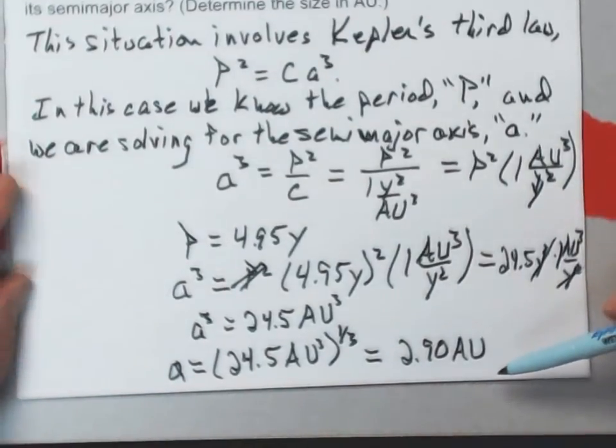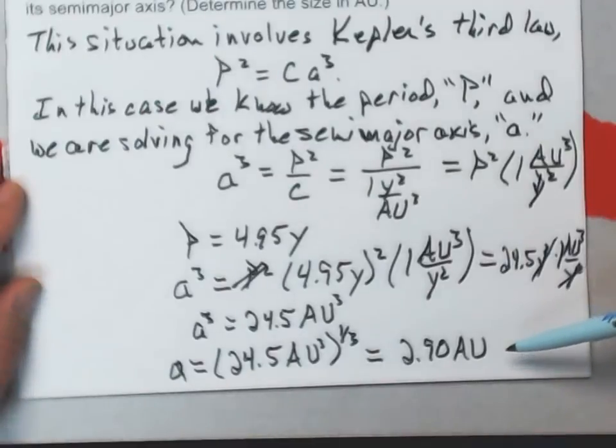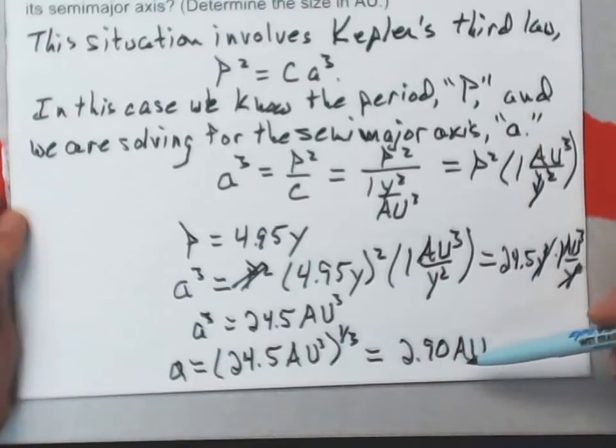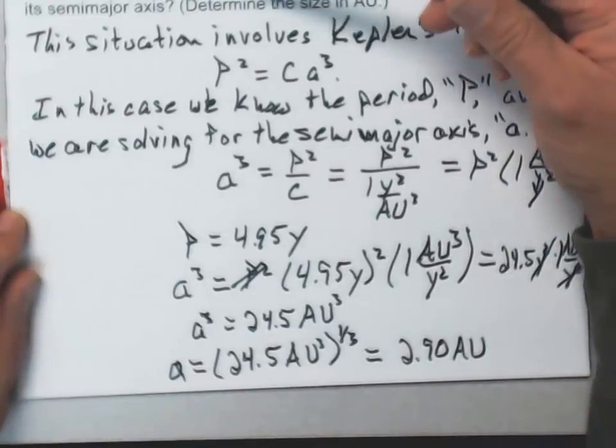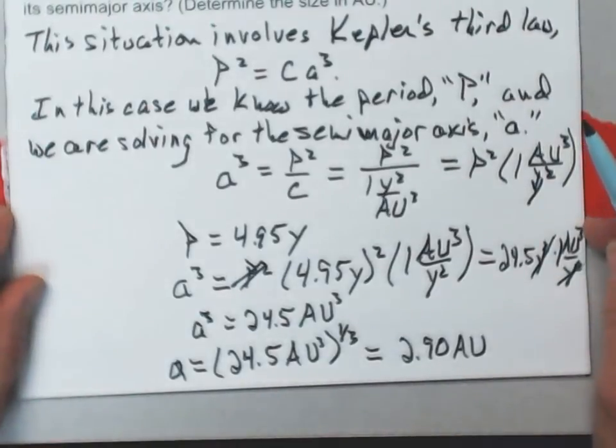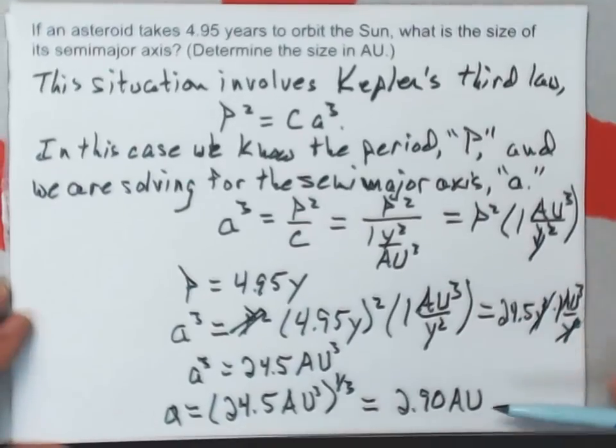That would put it somewhere between the orbit of Mars and Jupiter, which is where most of the asteroids happen to be. Chances are there's an asteroid out there that has an orbital semi-major axis of this and that orbits the Sun in 4.95 years. With all the thousands of asteroids that are out there, we should be able to find one pretty close to this one.